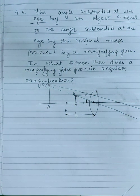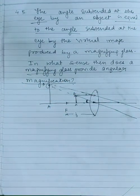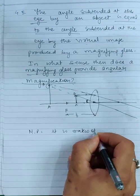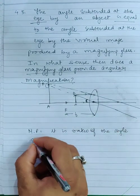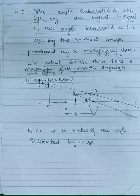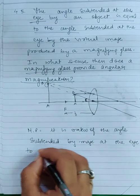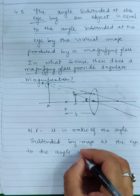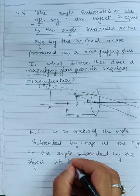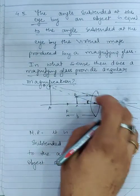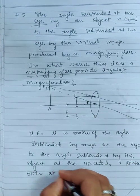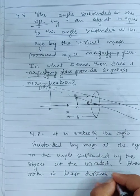What is the magnifying power? What is the magnification? Magnifying power is the ratio of the angle subtended by the image at the eye to the angle subtended by the object at the unaided eye, when both are at the least distance of distinct vision.